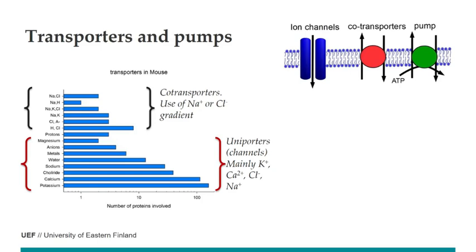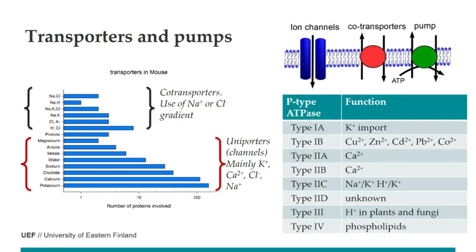Then we have uniporters — mainly channels — that transport potassium, calcium, chloride, sodium, as well as water channels, metal channels, and anion channels. As for pumps, they can pump a variety of things. We already saw the type 2C pump, which pumps potassium and protons, and the same type includes the sodium-potassium ATPase. There are also pumps for single ions like calcium or potassium, pumps for specific ions like zinc, and for example type 4 that transports phospholipids.